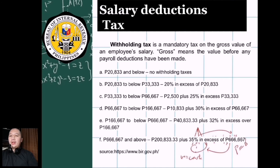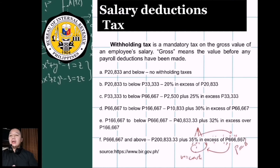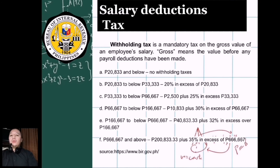Withholding tax is mandatory on the gross value of an employee's salary. Gross means the value before any payroll deductions — that is the raw amount. Net is the amount after all deductions have been taken out. There is a tax table that shows how much tax applies at a certain bracket, and here are the highlights based on the BIR.